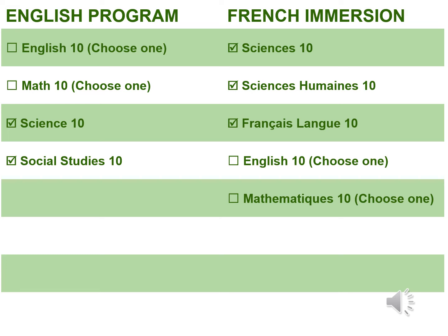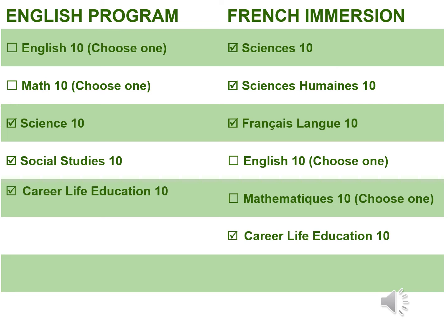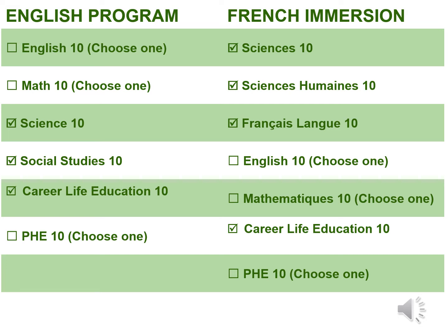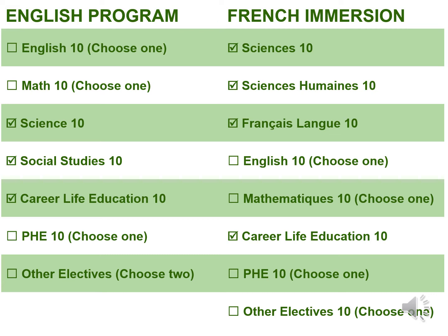All students are required to take Social Studies 10, or Sciences Humaines 10 for French immersion students, as well as Career Life Education 10. All students are also required to take a PHE — Personal Health Education — 10 course. If you choose PE Leadership, it will run all year back to back with your PE course. If you're choosing a hockey academy, you would not choose PHE 10.